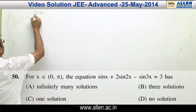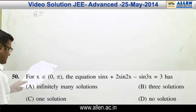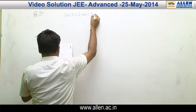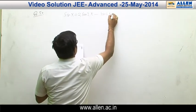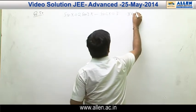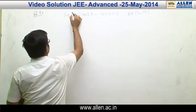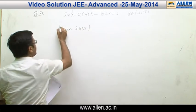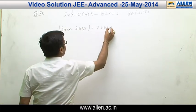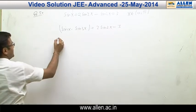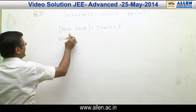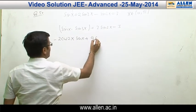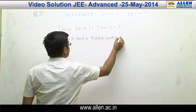Question 50. We have to find the number of solutions of the trigonometric equation sin x + 2sin 2x − sin 3x = 3, for x in [0, π]. Grouping the terms: (sin x − sin 3x) + 2sin 2x = 3. Applying the sin C − sin D formula and simplifying, this becomes 4 sin x · cos x · (something) equaling 3.